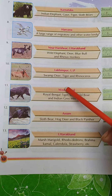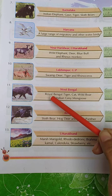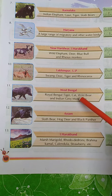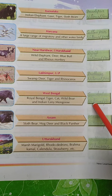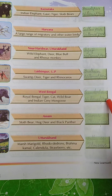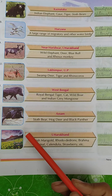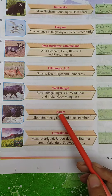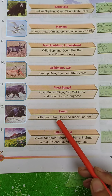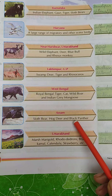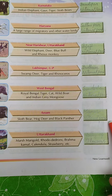Number eleven. State: West Bengal. The animals are Royal Bengal Tiger, wild boar, and Indian grey mongoose. The name of this national park is Sundarbans National Park. Number twelve: Assam. Animals are sloth bear, hog deer, and black panther. The name of this national park is Manas National Park.